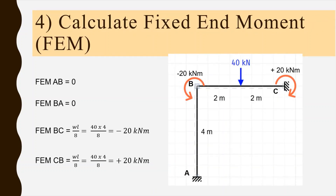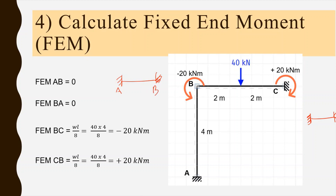Now we calculate the fixed end moments by considering the entire structure as fixed at both ends. Taking member AB first: there is no load acting on AB, so the fixed end moment at A and at B are both zero. Thus, FEM_AB = 0 and FEM_BA = 0.